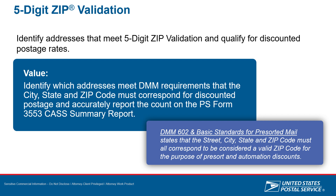Validation of a five-digit ZIP: what is considered a valid five-digit? With the software update, it must adhere to DMM-602 requirements, which state that the street, city, state, and ZIP code must all correspond in order to be considered a valid ZIP code. For the purpose of pre-sort and automation discount, all of those attributes must correspond to be considered a valid five-digit.